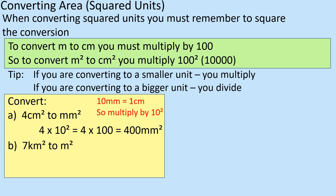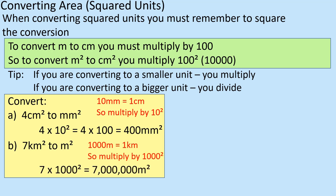7 kilometres squared to metres squared: kilometres to metres, the conversion is 1,000, so I'm going to times it by 1,000 twice, which gives 7 million metres squared. Sometimes people see that and think they're off track because they're not expecting such a big number, but that's definitely right.